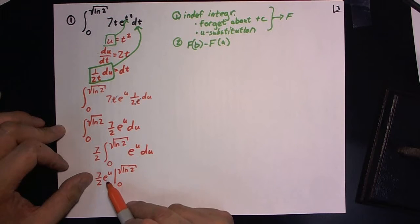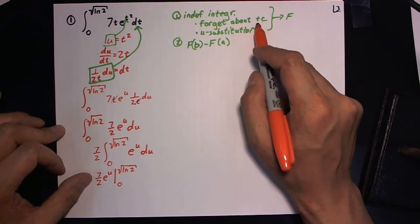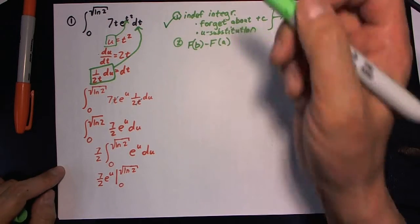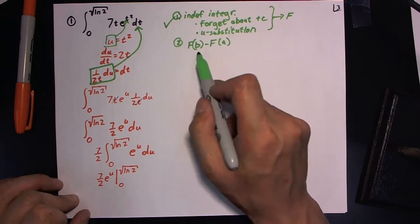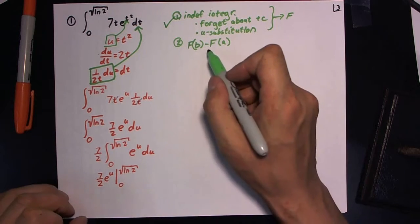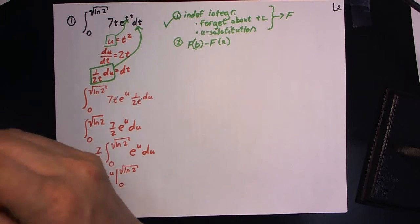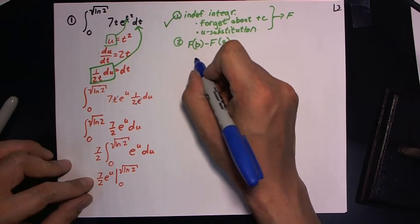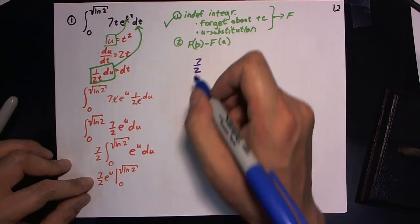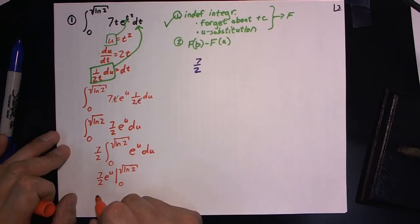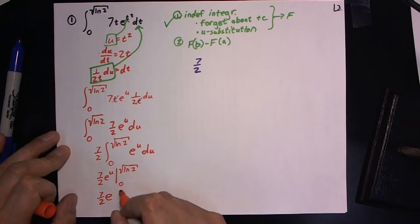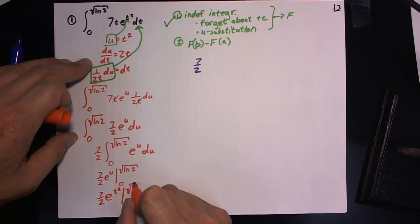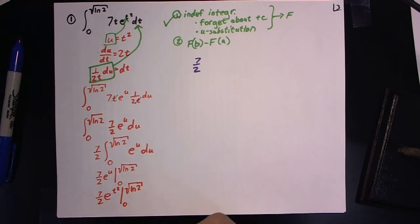So integral is e to the u. We forgot about the plus c, which we were supposed to do. You're supposed to not have the plus c. And so we are done with step one of taking this definite integral. Next, we evaluate at the upper and lower boundaries and then take the difference between the two. So we'll do this second step. Let's use the blue marker. Oh, I forgot to do one key thing down here, and that is back substitute the u.